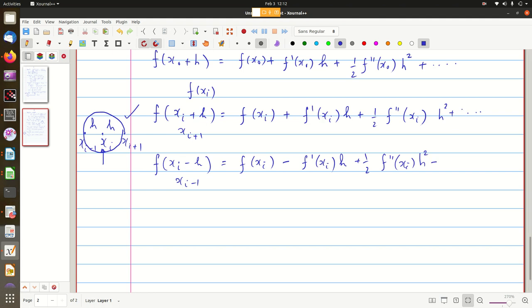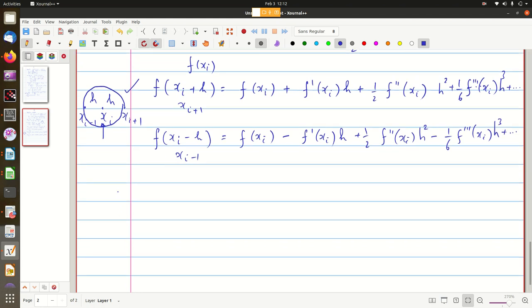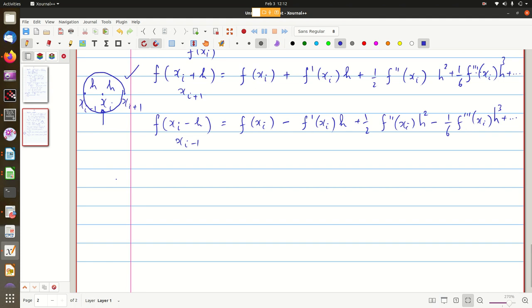So plus half f double dash of xi h squared, so the next one will be minus. So here you will get actually 1 by 3 factorial, which is 1 by 6, f triple dash of xi into h cube plus etcetera. Here you will get minus 1 by 6 f triple dash of xi into h cube, etcetera.